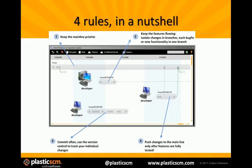The four rules to keep in mind when doing Branch Per Task are: first, keep your mainline pristine — clean and ready to be put into production. Second, keep the features flowing — isolate changes in branches; each bug fix or new functionality goes to a new branch, and you never stop development for code freeze. Third, commit as often as you need — every developer uses version control to track their individual progress. Fourth, push changes to the mainline only when features have been completely tested. These four rules, in a nutshell, are the foundation for successful Branch Per Task and the basic operations in Plastic SCM.